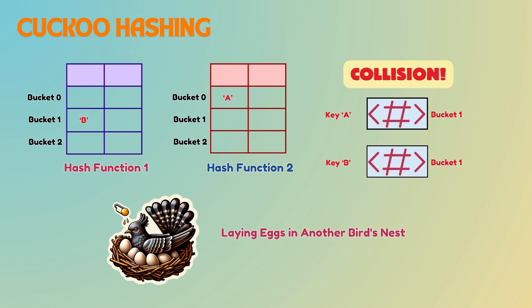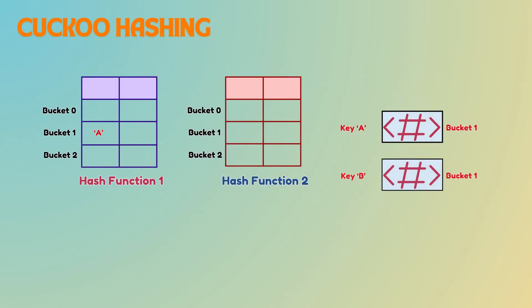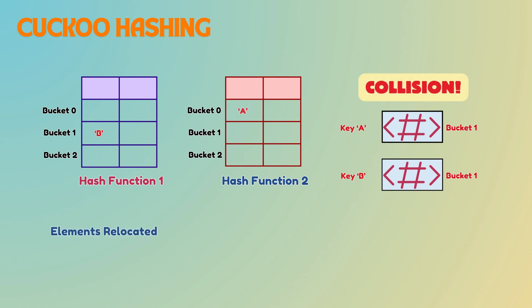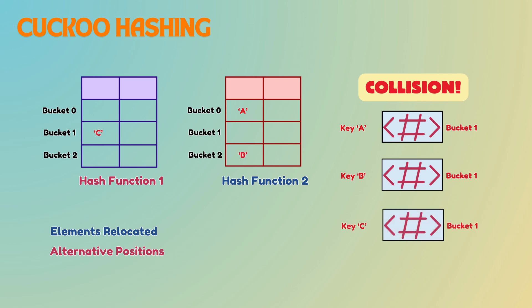Hence the name, cuckoo hashing. The idea behind cuckoo hashing is simple: when inserting a new element, if a collision occurs, the existing element gets relocated to one of its alternative positions, triggering a chain of reinsertions until every key has its own spot.